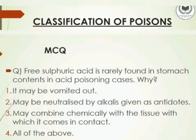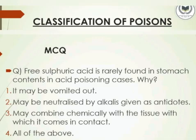As you know from our previously uploaded video on classification of poisons, the question was: free sulphuric acid is rarely found in stomach contents in acid poisoning cases — why? The options were: it may be vomited out; it may be neutralized by alkali given as antidote; it may combine chemically with the tissue it comes in contact with; or all of the above. The correct answer is: all of the above.